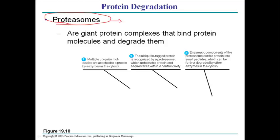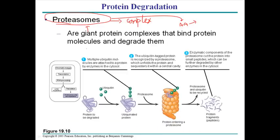The proteasome is a protein degradation complex — it degrades proteins by breaking them up into smaller pieces, into amino acid sequences. A giant protein comes in, and small amino acids come out. Those amino acids are further taken up via different anabolic pathways to make other proteins and other products.